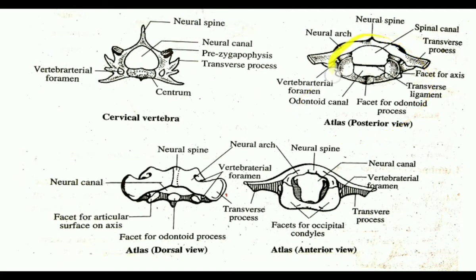Atlas is the first cervical vertebra. It is a ring-shaped vertebra without a proper centrum.